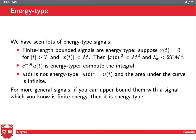E to the minus three T U of T is energy-type. So we saw these decaying exponentials that are energy-type. But on the other hand, U of T is not energy-type. So U of T is not energy-type because the area under this U of T is going to be infinite as we integrate from minus infinity to infinity.